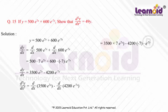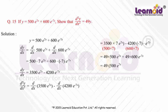Rewriting 3500 as 7 into 500 and 4200 as 600 into 7, we get d square y by dx square is equal to 49 into 500 e to the power 7x plus 49 into 600 e to the power minus 7x. Taking 49 common, we are left with 500 e to the power 7x plus 600 e to the power minus 7x, which is the same as y. Hence proved, d square y by dx square is equal to 49y.